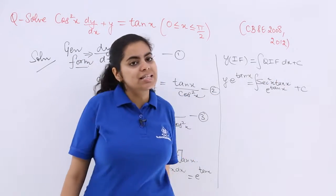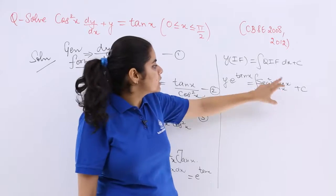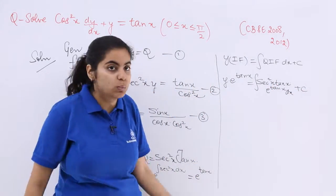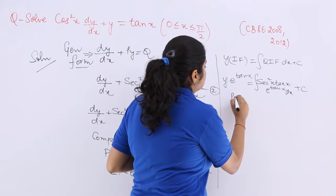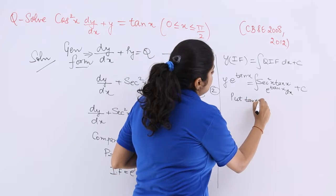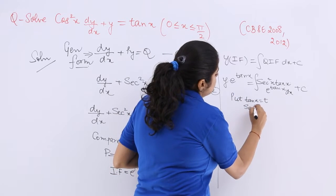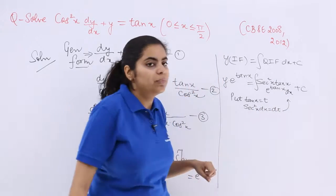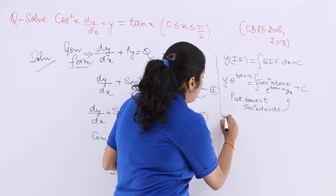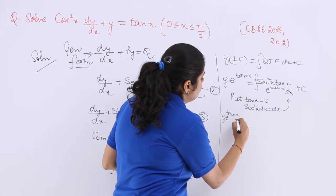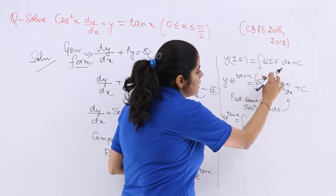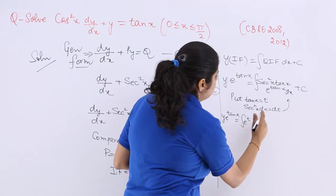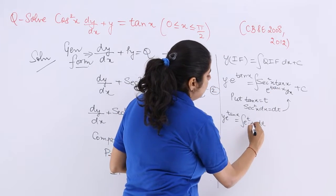To solve the integral, use the substitution tan x = t, so sec²x dx = dt. Substituting into the equation, y · e^(tan x) = ∫t · e^t dt.